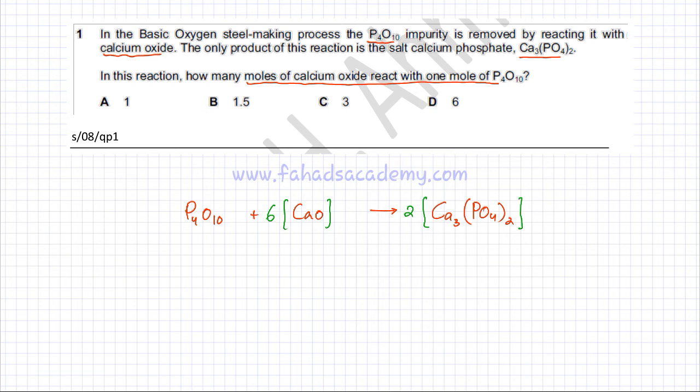The question wanted to know how many calcium oxides react with one mole of P4O10. So with one P4O10, there are six calcium oxides that are reacting. So the correct answer is going to be D.